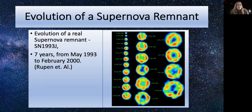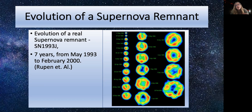We have actually seen the evolution of a real supernova remnant in real time. This image shows the evolution of SN 1993J, observed over a period of seven years from May 1993 to February 2000 — from the earliest observation to the latest. This is really cool because we can see the change over seven years and observe this supernova remnant changing within our lifetimes. Stars usually seem unchanging — they sit on the main sequence for millions or billions of years and we don't see them change — but with a supernova remnant we can see it expand outwards over just seven years.